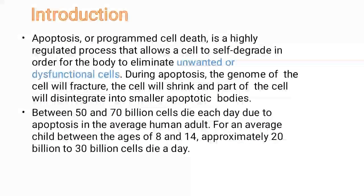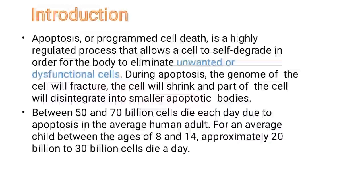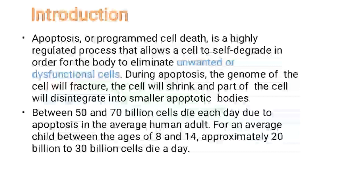The second condition is necrosis, in which the cell is not ready to undergo apoptosis but is forced to die due to accidental conditions — some kind of cell injury that causes cell death. So there are two ways a cell can be removed: apoptosis, which is programmed cell death, and necrosis, which is accidental cell death.